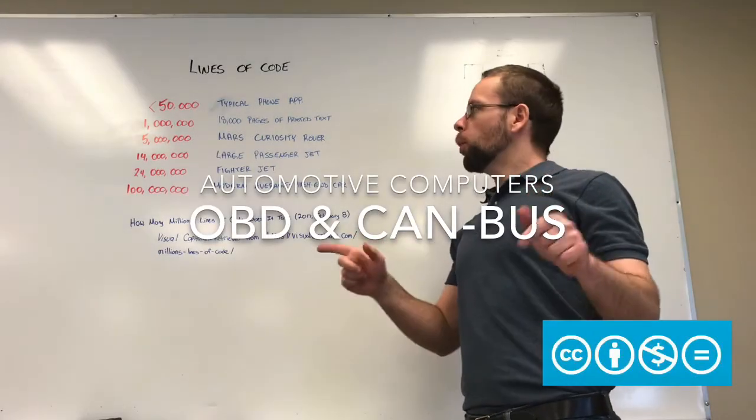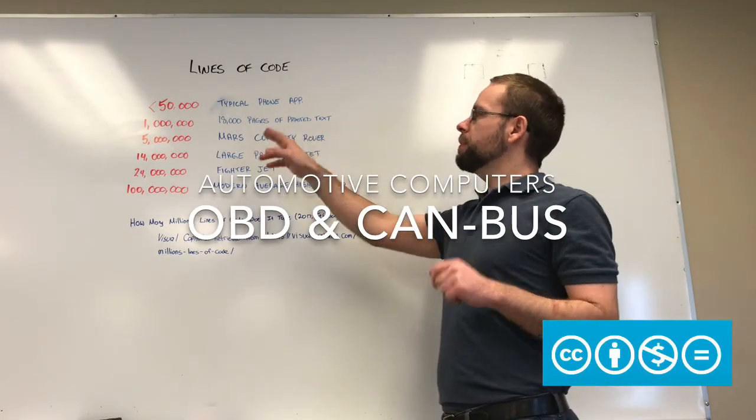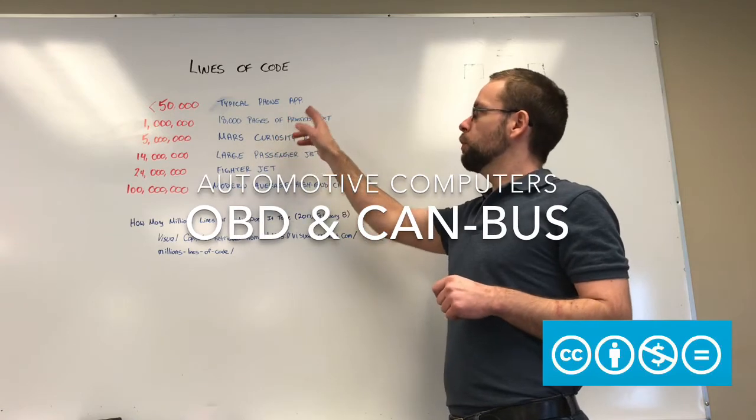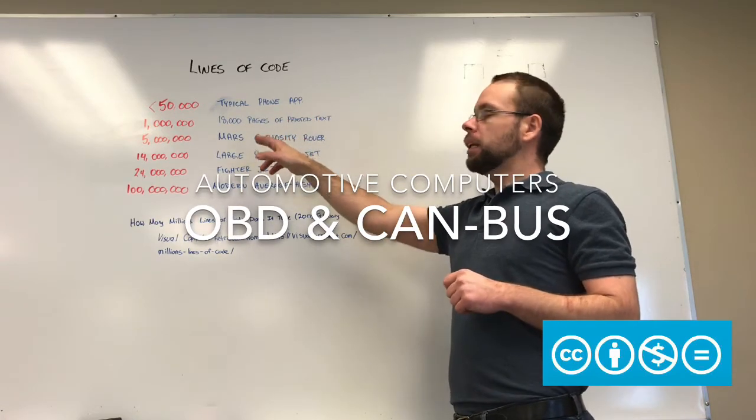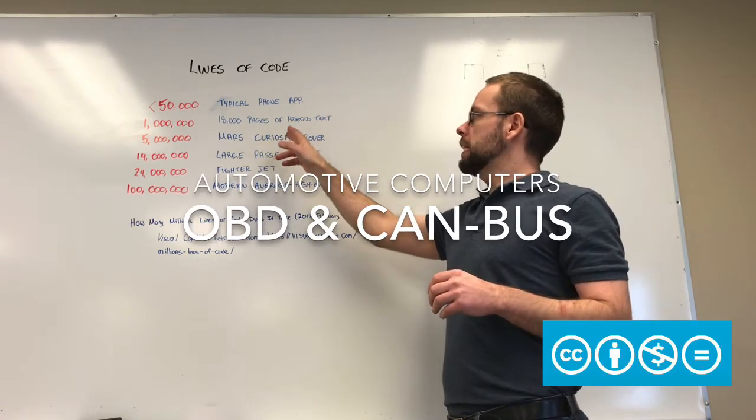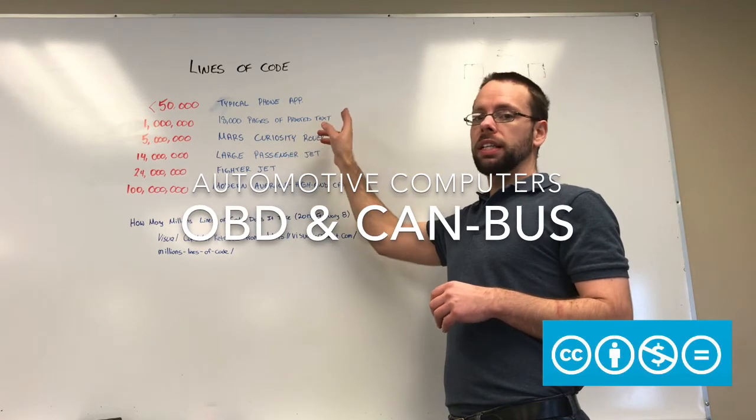Hi, did you know that it takes typically about 50,000 lines of code to make a phone app? A million lines of code to store 18,000 pages of printed text.